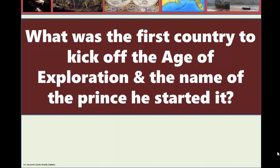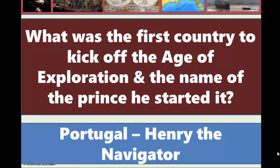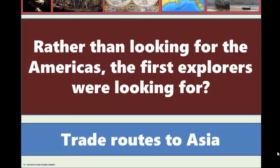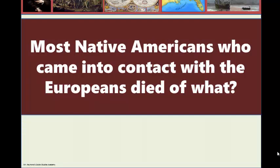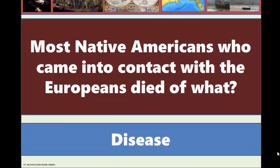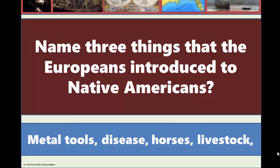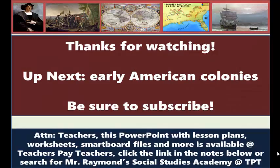What are the three G's of exploration? Gold, glory, and God. Which was the first country to kick off the age of exploration and the name of the prince that started it? That would be Portugal and Henry the Navigator. Rather than looking for the Americas, the first explorers were really looking for trade routes to Asia. Most Native Americans who came into contact with the Europeans died of disease. Name three things the Europeans introduced to Native Americans: metal tools, horses, and livestock, among others. Thanks for watching — be sure to subscribe because up next we are going to look at the first colonies and settlements of North America. Teachers, this PowerPoint with lesson plans, smart board files, worksheets, and a variety of other resources are available at Teachers Pay Teachers — click the link in the notes or search for Mr. Raymond's Social Studies Academy.